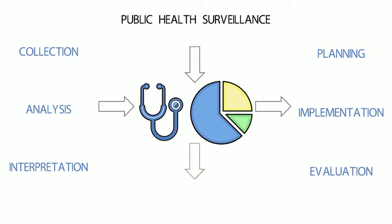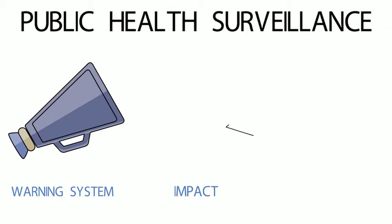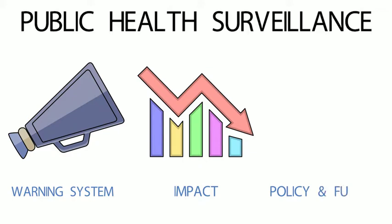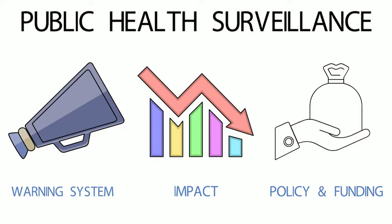Public health surveillance can serve as an early warning system for impending public health emergencies, a way to document the impact of an intervention or track progress towards specified goals, and a means to monitor and clarify the epidemiology of health problems to allow priorities to be set and to inform public health policy, funding and strategies.